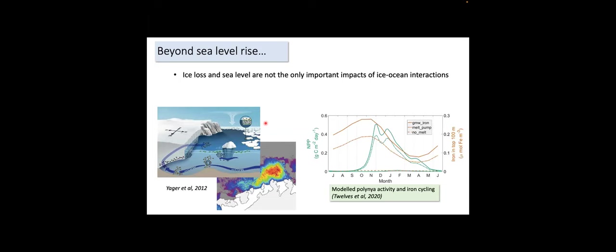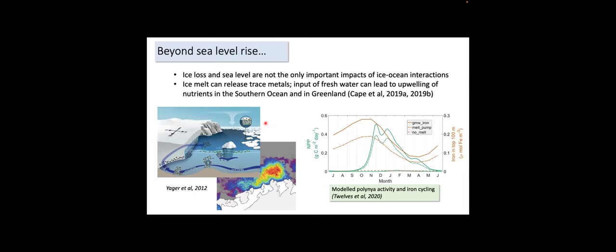Ice loss and sea level are not the only important impacts of ice-ocean interactions. Ice melt can release trace metals like iron, which is a limiting factor in the Southern Ocean and forms the basis of the food web on the continental shelf. Input of fresh water at depth can lead to upwelling of nutrients in the Southern Ocean and in Greenland. Studies have shown that if there's no melting on a continental shelf similar to the Amundsen, there's almost no productivity either.